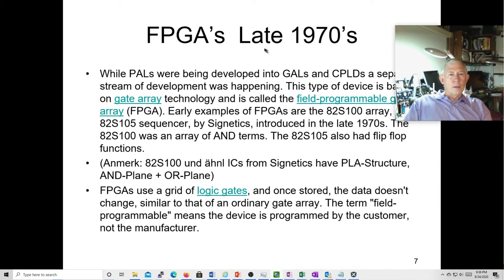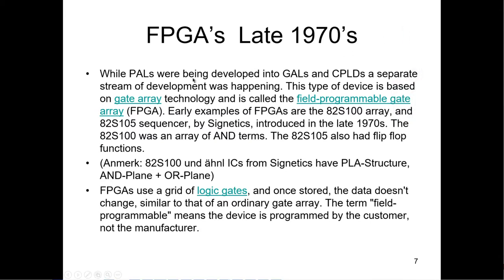FPGAs basically showed up in the late seventies. Programmable array logics were developing into complex programmable logic devices — a CPLD was essentially a bunch of PALs that could be interconnected. In a separate push, there was gate array technology leading to the field programmable gate array. Some of the early ones were by Cignetics; some had arrays of AND terms and some included flip-flops. It took a while before they were programmed by hardware description languages.